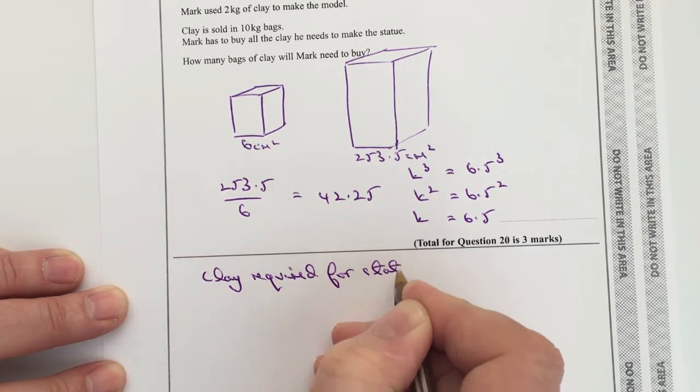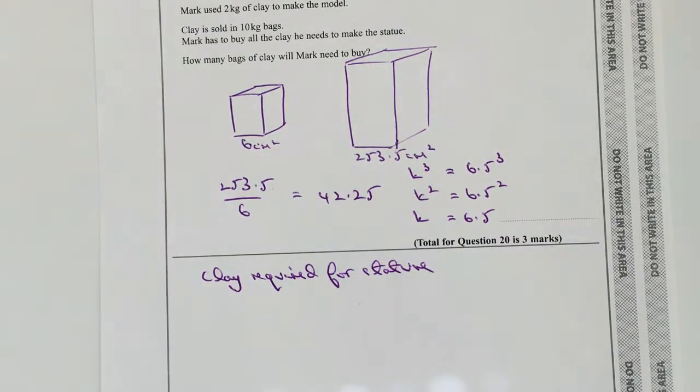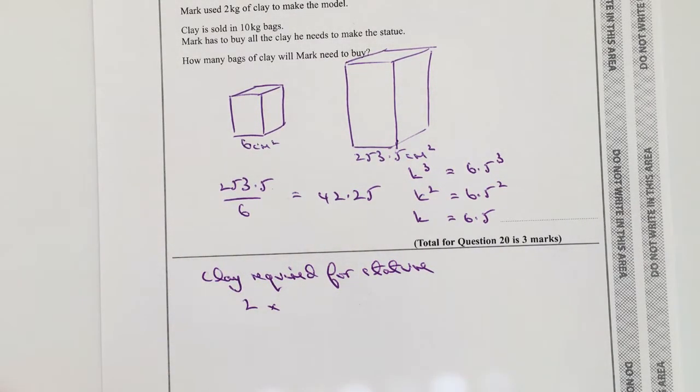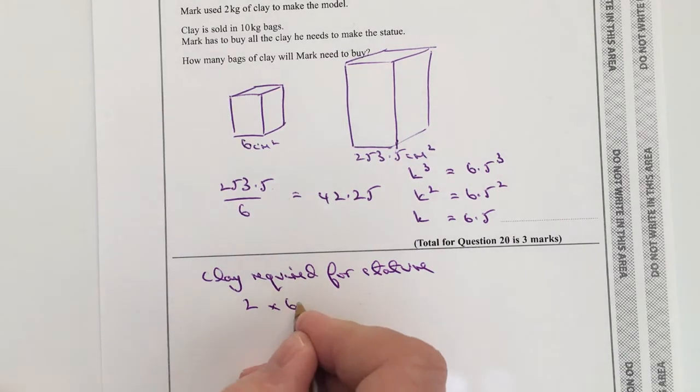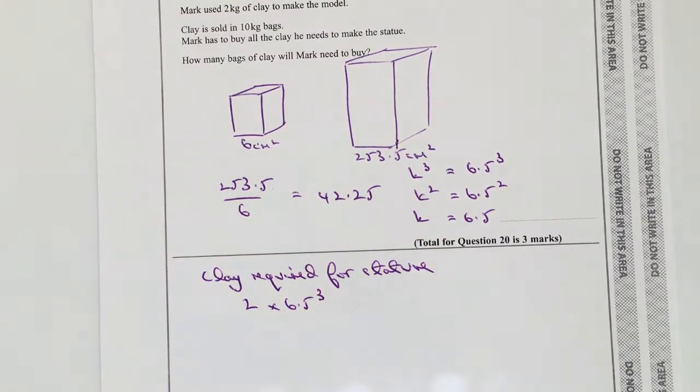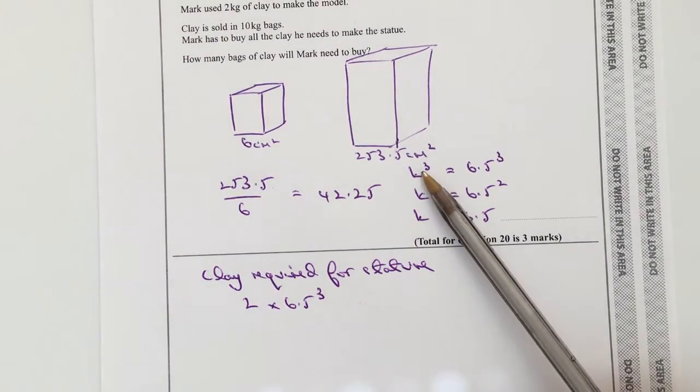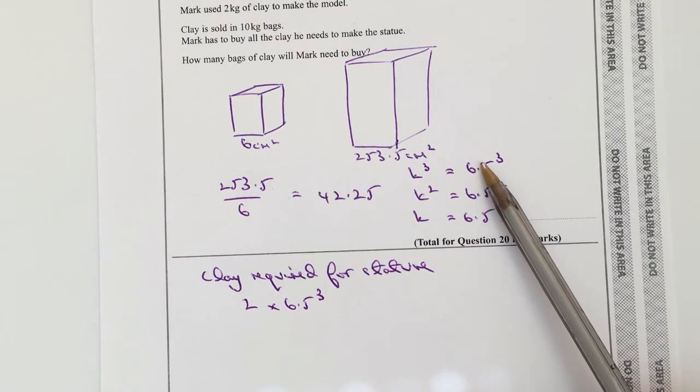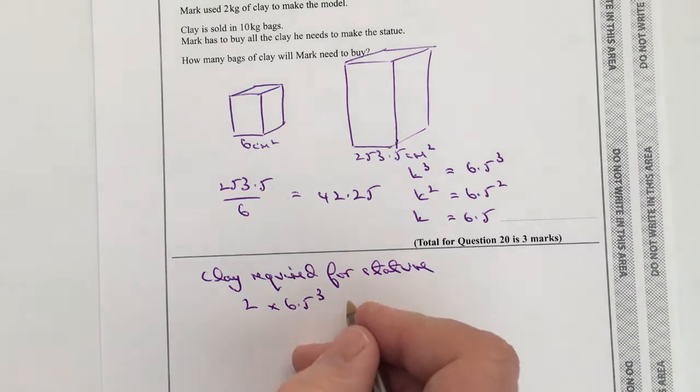So that's going to be the clay required for the actual model, which is 2 kilograms, and I'm going to multiply that by 6.5 to the power of 3, because it's that k cubed, it's the constant cubed that I talk about to work through for volume. Okay, so that's going to work out as 549.25 kilograms.